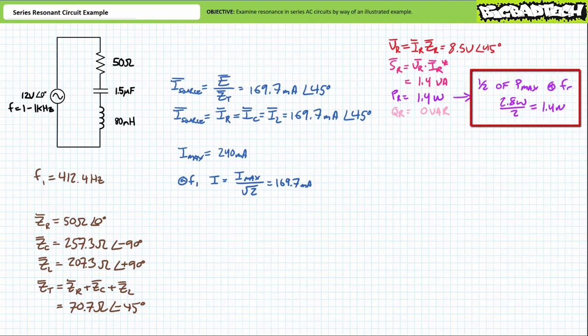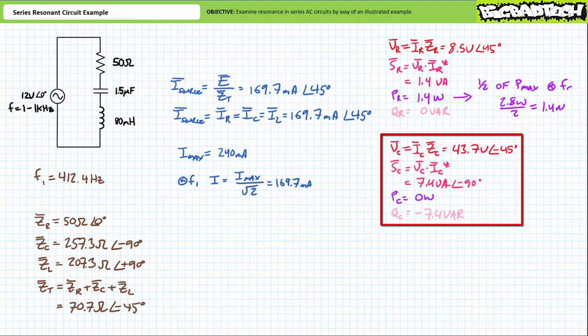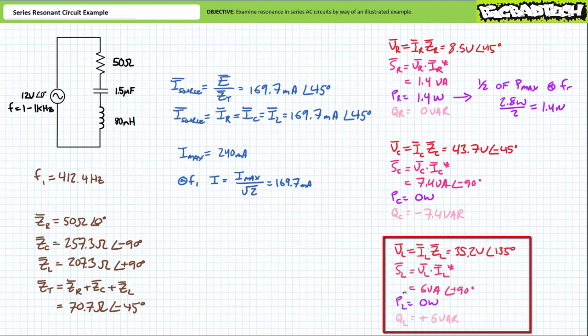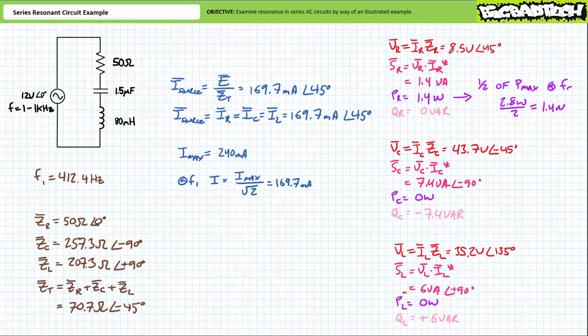Note the resistor experiences roughly half power at the lower half power frequency, as we anticipated. Another application of Ohm's law demonstrates voltage across the capacitor will be approximately 43.7 volts at an angle of negative 45 degrees. Application of the AC power formula demonstrates the capacitor will experience 7.4 volt amperes of apparent power, none towards real power, and all negative 7.4 VARs directed towards a reactive interchange. Finally, voltage across the inductor will be approximately 35.2 volts at an angle of 135 degrees. The inductor experiences 6 volt amperes of apparent power, none towards real power, and all positive 6 VARs towards a reactive interchange. At the lower half power frequency, the capacitor and inductor no longer experience equal and opposite impedance, voltage, and reactive power — the capacitor seems to be dominating the circuit. Similar behavior would be anticipated at the upper half power frequency of 511.9 hertz, albeit with an inductive flavor. I leave this as an exercise to the viewer.